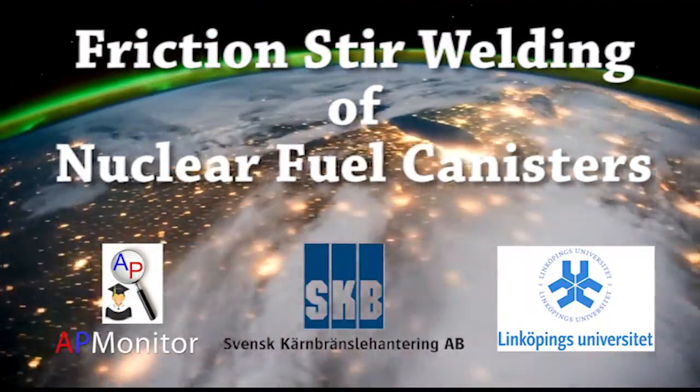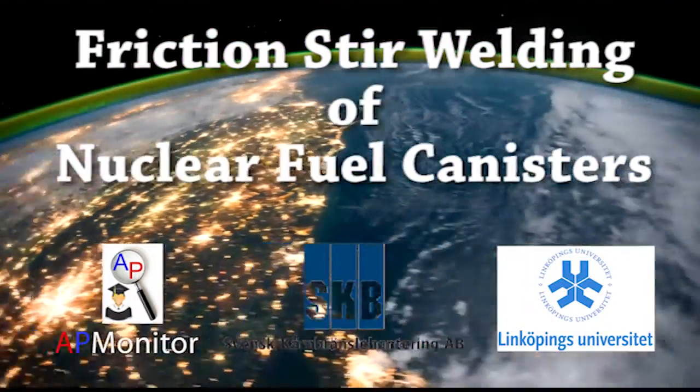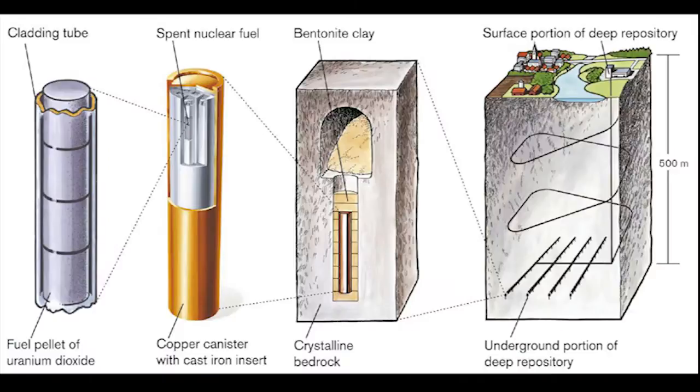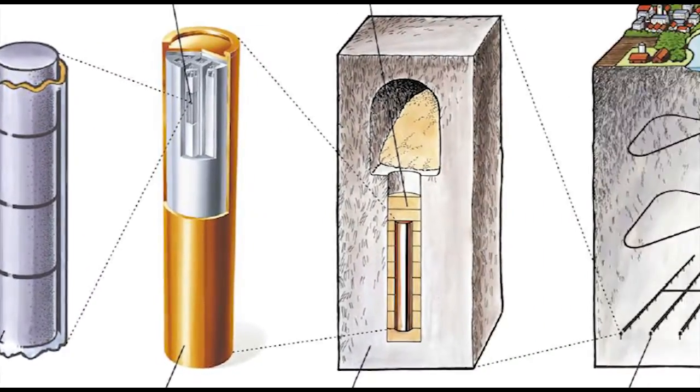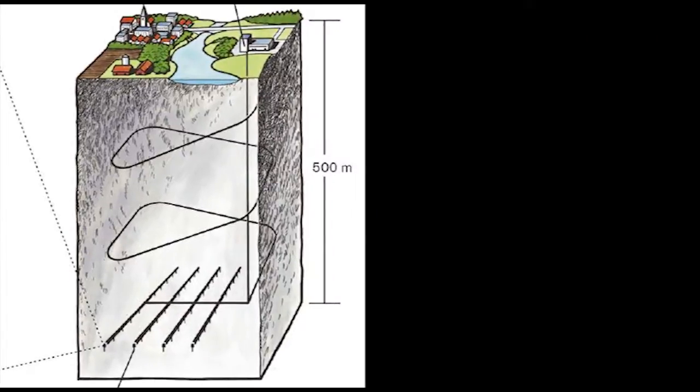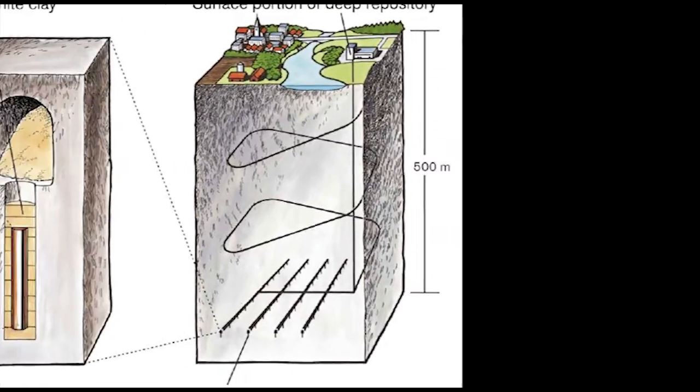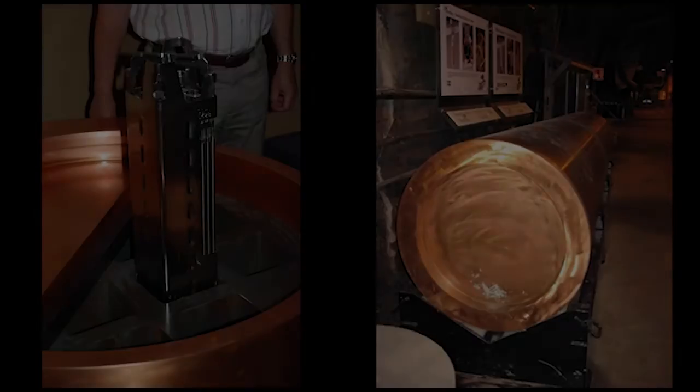The Swedish Nuclear Fuel and Waste Management Company, or SKB, is working on a final repository for high-level spent nuclear fuel. Copper canisters with 5-inch thick walls are loaded with fuel rods and sealed. The canisters will be stored deep underground in facilities designed to store the waste long term.